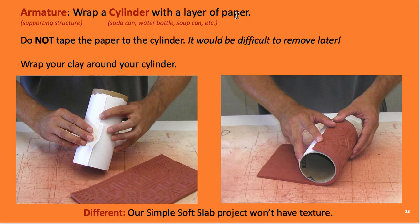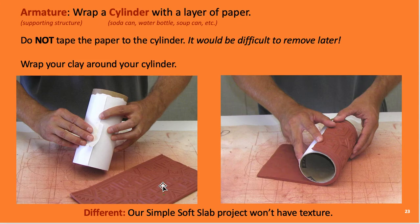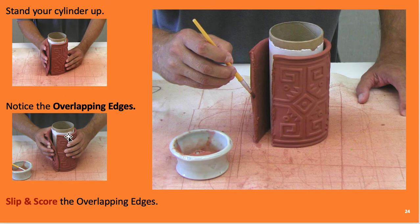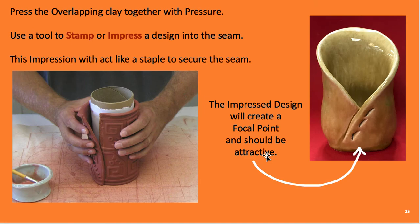For the armature, wrap a cylinder with a layer of paper — a soda can, water bottle, or soup can works. Do not tape the paper to the cylinder or you can't slide it off. Wrap your clay around the cylinder, leaving it smooth. Stand the cylinder up, slip and score the overlapping part using your comb and toothbrush, apply gentle pressure, press the overlapping clay together, and use a tool to stamp or impress a design into the seam — this impression acts like a staple to secure the seam.